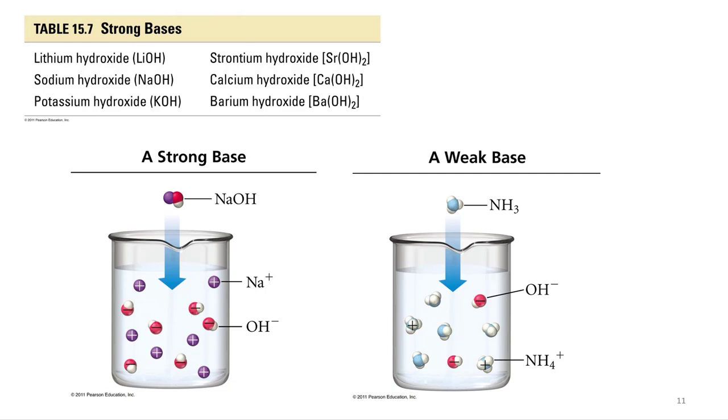Whereas weak bases set up equilibrium, so you have both reactants and both products. So for ammonia, if you throw ammonia, it's going to accept protons, but you're still going to have some ammonia and ammonium, and you'll set them up in equilibrium.